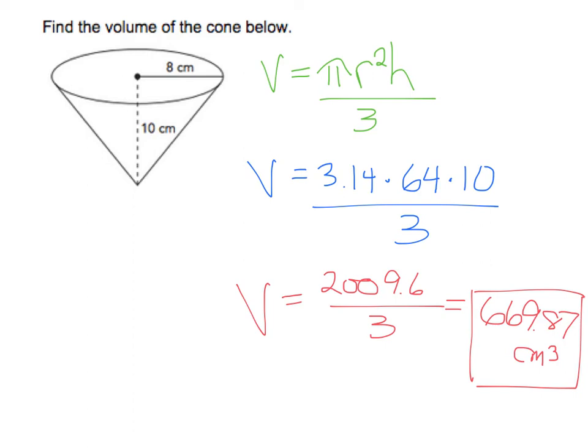In Schoology, pay attention to how many decimals I ask you to round to, because if you don't round correctly, you will get the problem wrong. Again, there will be two entries, one for the number and one for the label or unit.